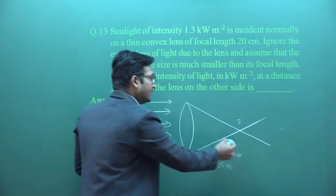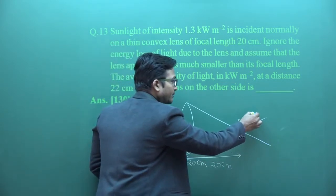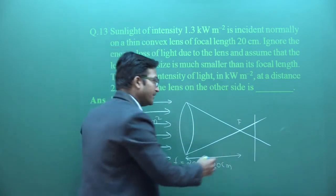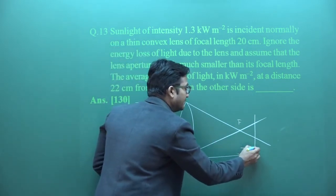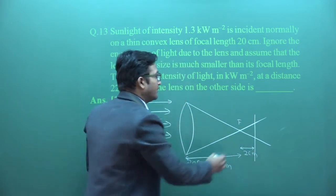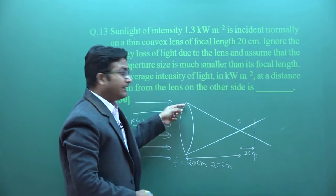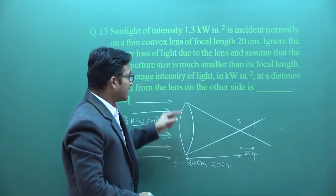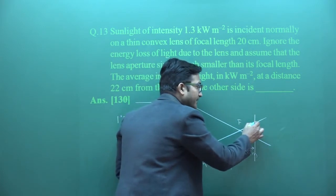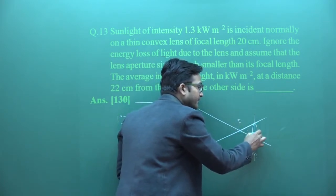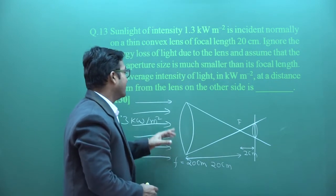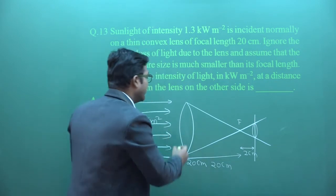So, 20 centimeters is the focal length and we need to find the average intensity at 22 centimeters — that is 2 centimeters beyond the focus. We need to move further past the focus. Whatever energy was falling on the lens, considering no losses, converges into a small area.